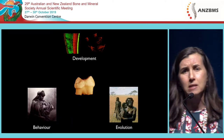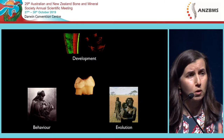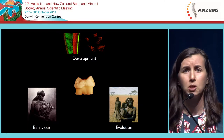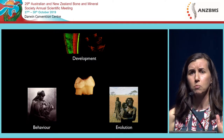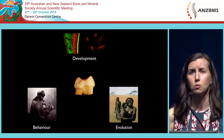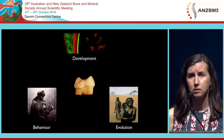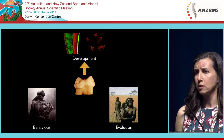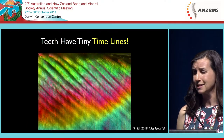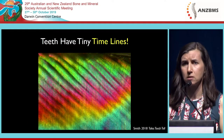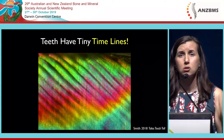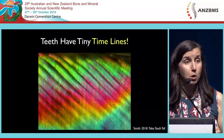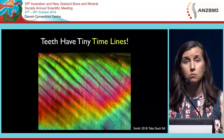Teeth have this amazing history locked inside them which can tell us an incredible amount about our past development, our past evolution, and our behavior. I'm going to start by focusing on some key information we can extract from the mineralized aspect that tells us a lot about our early life development. This is based on a foundational truth: teeth have tiny timelines locked inside them. There are circadian rhythms at play during the formation of our hard tissues, including our bone, which are permanently registered in our teeth.